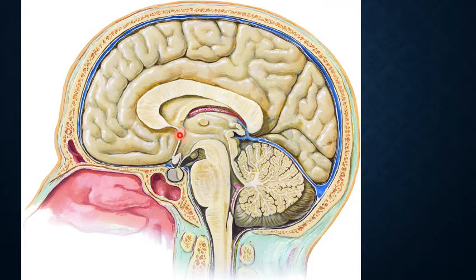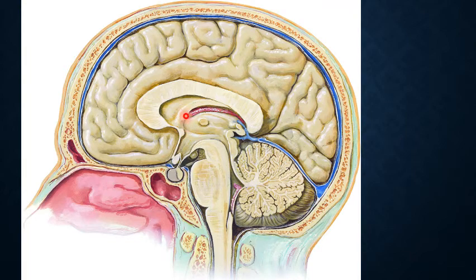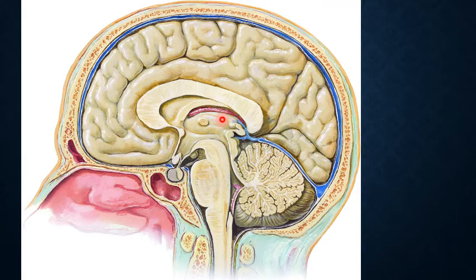Just below the anterior commissure we can identify the pre-optic area and the anterior nucleus of the hypothalamus, where the subcommissural fibers terminate. Some fibers join with the columns of the fornix, while other fibers reach posteriorly to the habenular nucleus through the stria medullaris thalami. The stria medullaris thalami will be explained in the next class.